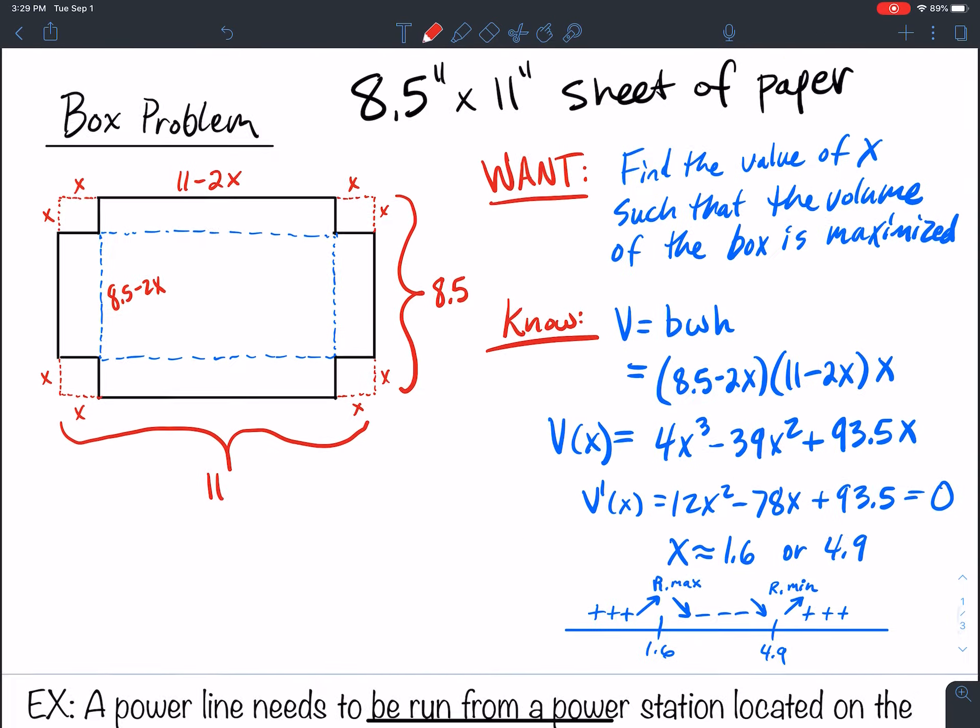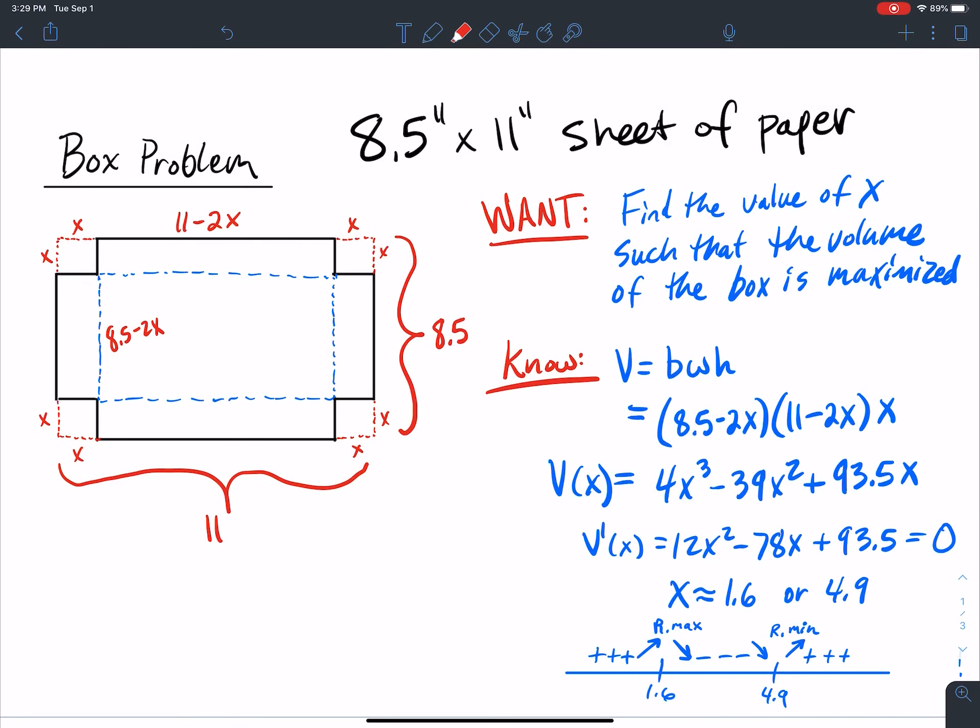Now we need to test these values here because we're trying to maximize the area, not minimize it. So just based off the first derivative test, I know this is probably going to work, but we need to make sure the values actually work. Let's look at 4.9. If x was equal to 4.9, what would that mean that this side would have to be? If I plug 4.9 in, -2 times 4.9 is going to be a negative number that's bigger than this, which actually makes this side negative. Can I have a negative side here? There's no such thing as negative distance.